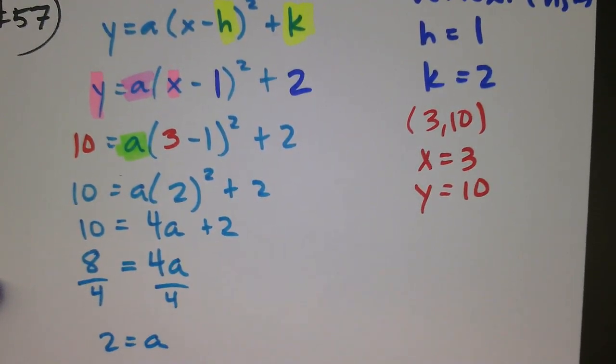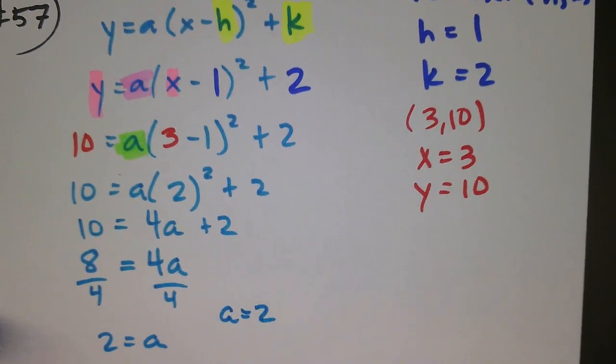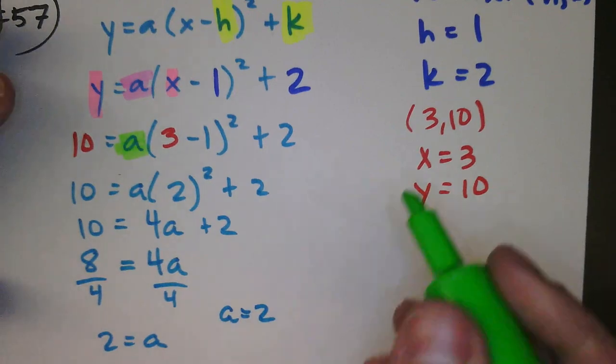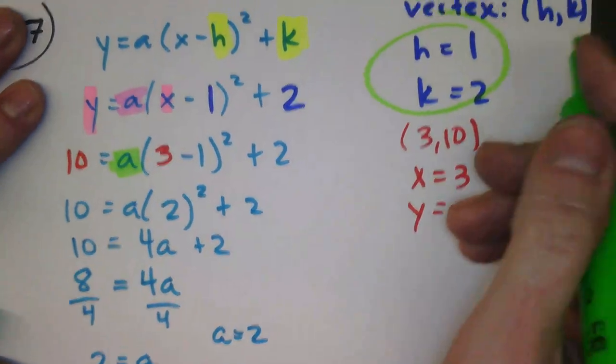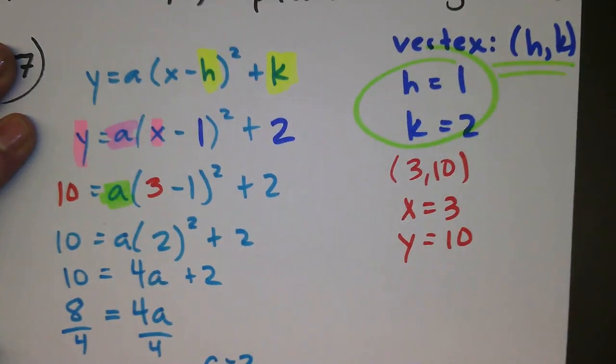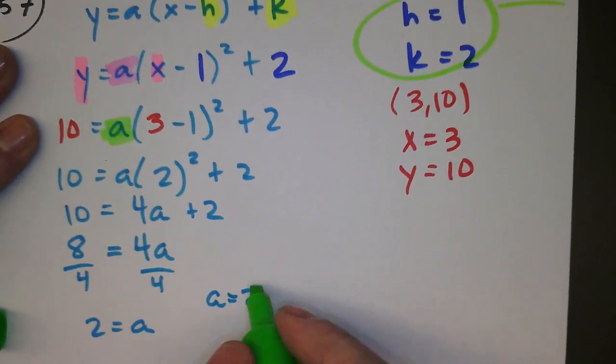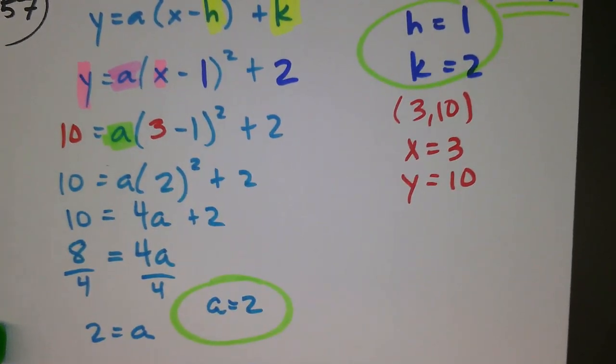8 divided by 4 is 2. So my a value is 2. Now I have everything I need. I have an h and k value, and that came from the vertex that I was given in the problem. And then I just solved for a. So I got my a value of 2.